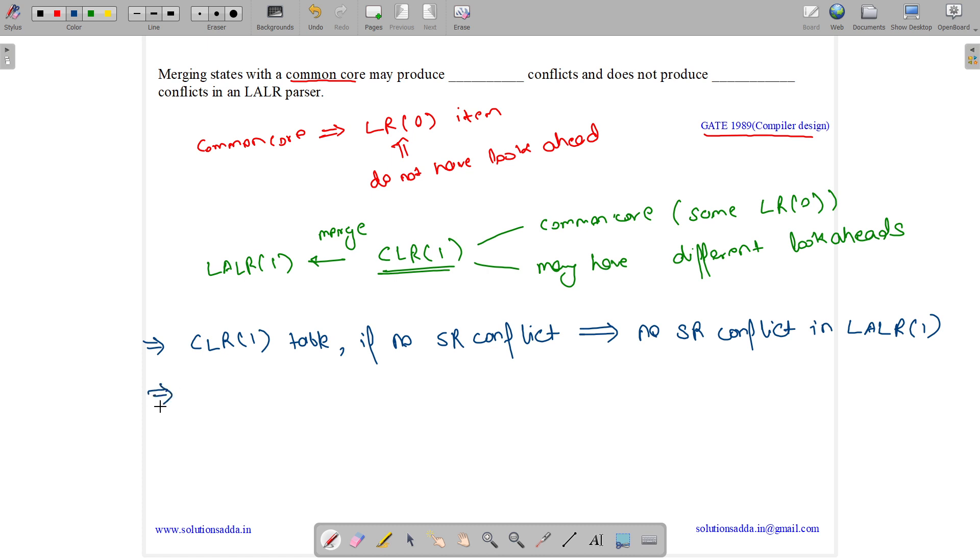And the second observation is, in CLR1 table, if no reduce-reduce conflict is there, then there may or may not be RR conflict in LALR1.